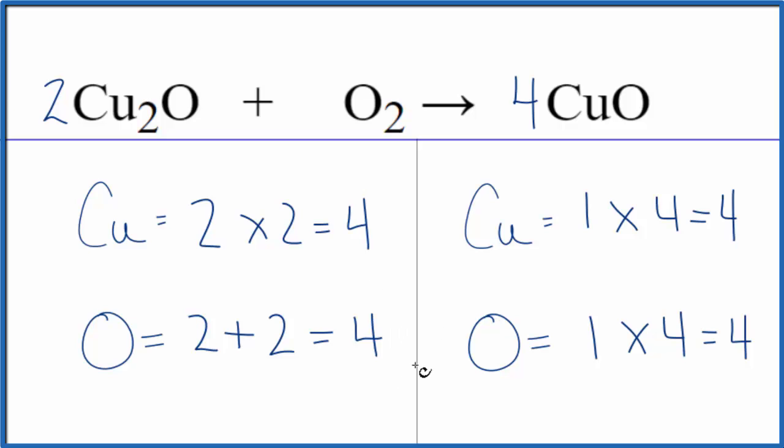Often when you have that odd number, if you can get it to be an even number, that'll help with balancing. This is Dr. B with the balanced equation for Cu2O plus O2 yields CuO. Thanks for watching.